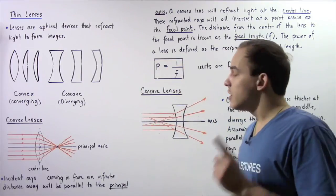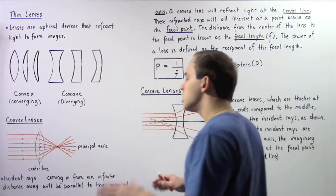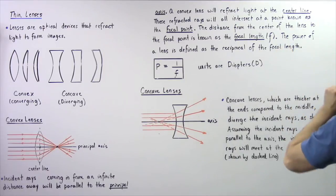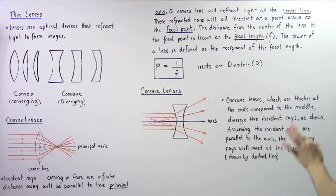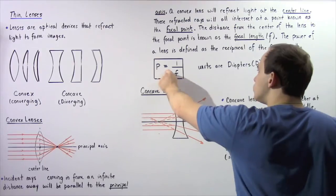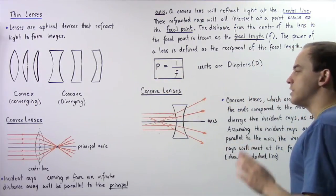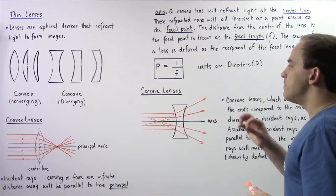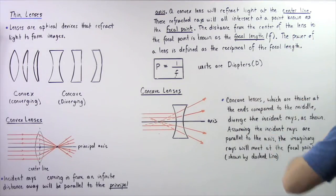The distance from the focal point to the center of our lens is known as the focal length, given by letter F. We define the power of the lens as the reciprocal of the focal length: power equals one divided by F. The focal length is given in meters, so power is given in units of meters to the negative one, known as diopters, given by D.